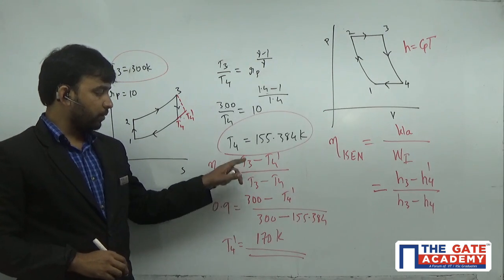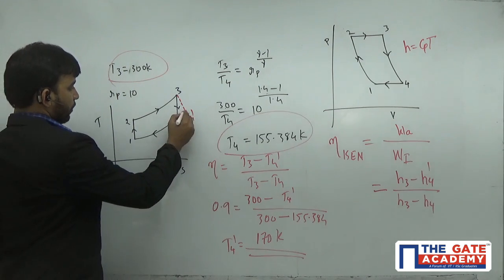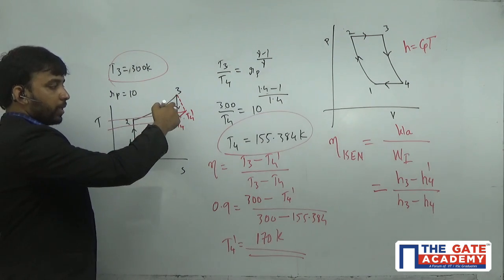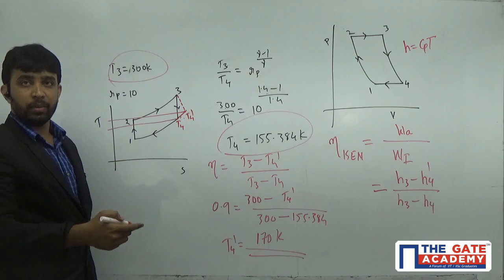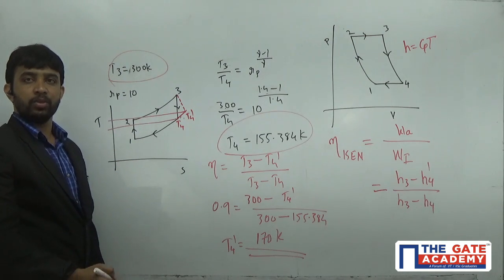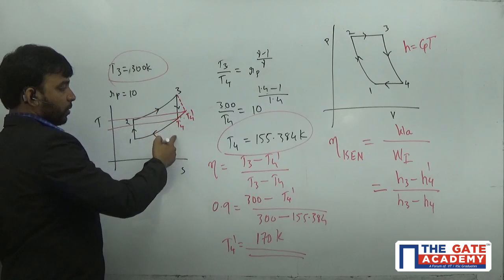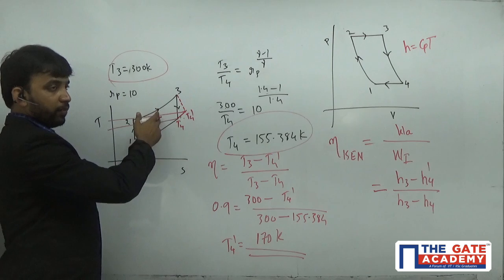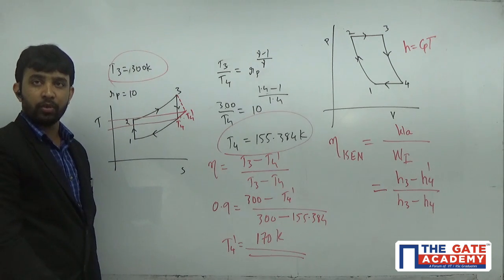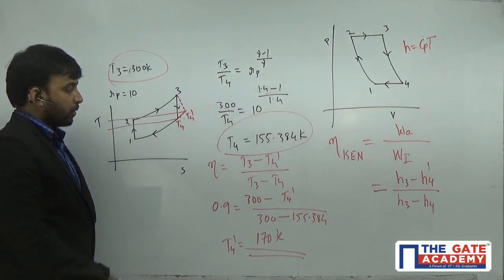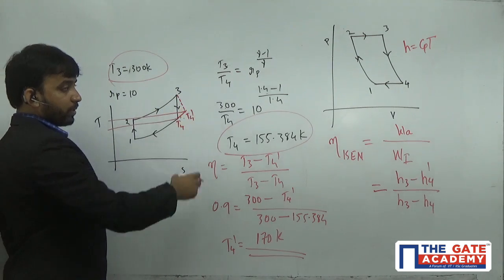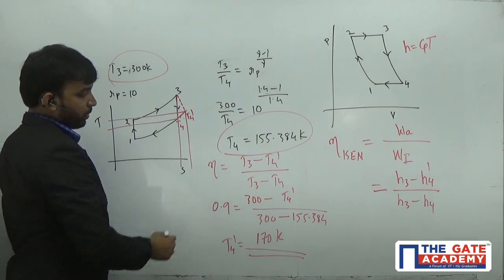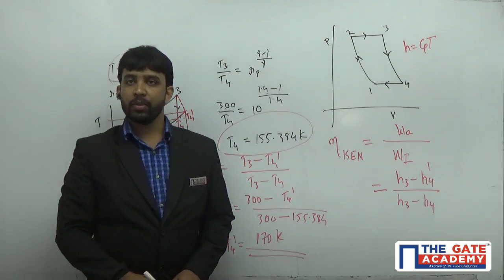You can see T4 dash is more than T4. You may think, why have you drawn the red color line towards right? Because it is an actual process. In any actual process, entropy has to increase. Earlier the entropy was remaining constant, S3 and S4 were equal. If I draw the red color line towards left, from state 3 to state 4 dash, entropy would be decreasing. That will never happen. From state 3 to state 4 dash, entropy is increasing because it is an actual process. In an actual process, entropy increases.